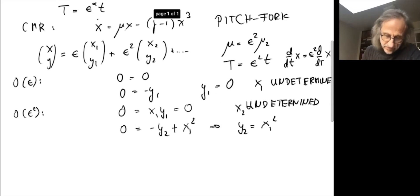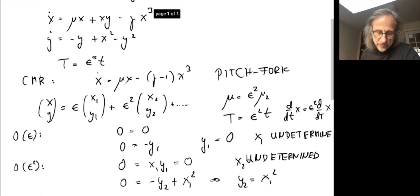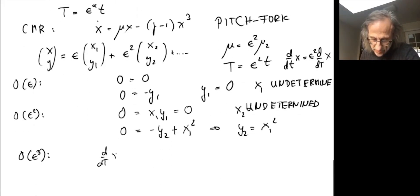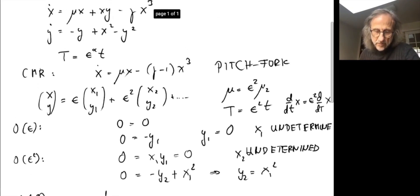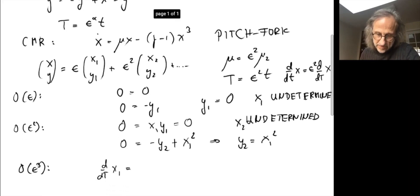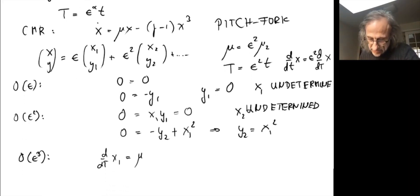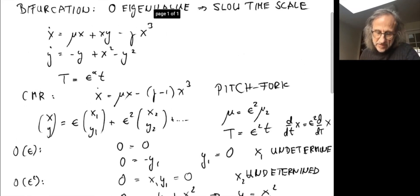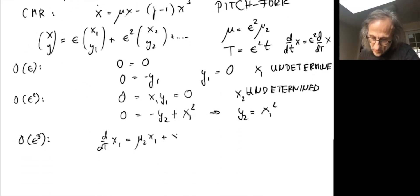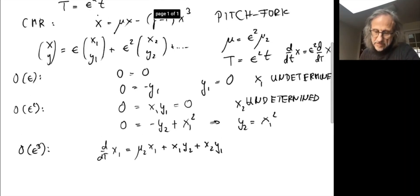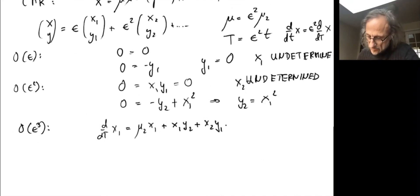We go to order ε³. We get first a slow time derivative of x₁. So we get d/dT of x₁ equals—then we have μx, which is μ₂x₁ plus xy, which is x₁y₂ plus x₂y₁ in principle, and then finally -γx₁³.